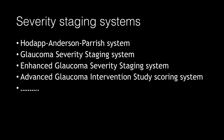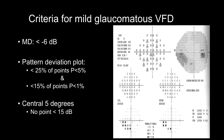For staging the severity of the visual field defect, there are many different systems. Today I will talk about the first one: the Hodapp-Parrish-Anderson system. In the mild stage, the mean deviation is between zero and minus six dB. In the pattern deviation plot, less than 25 percent of points have a p-value less than five percent, less than 15 percent have a p-value less than one percent, and no point at the central five degrees has a dB value below 15.